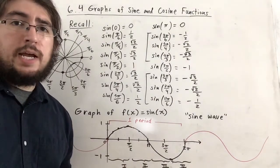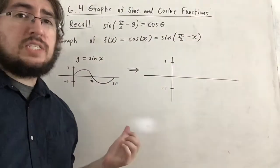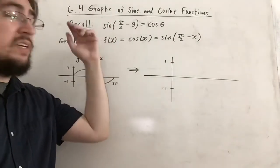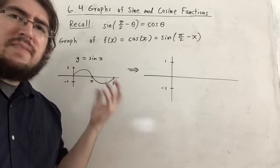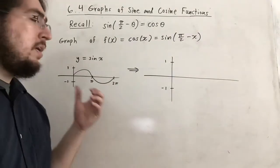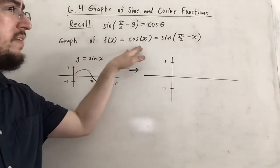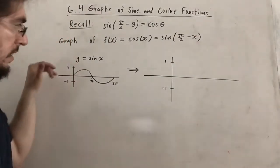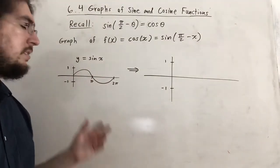Now let's consider cosine. Recall the co-function identity: cosine of θ equals sine of (π/2 − θ). We can use this along with transformations from algebra to derive the graph of cosine from the sine graph we already have. So cosine of x is just sine of (π/2 − x), and we can apply transformations: the negative in front of x flips it across the y-axis.